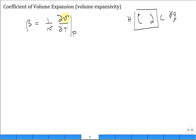It's 1 over the specific volume times the rate of change of specific volume with respect to temperature holding pressure constant. Some books will show you that it's equal to minus 1 over rho, the partial of rho, with respect to temperature holding pressure constant.